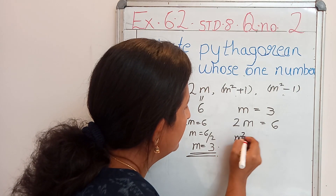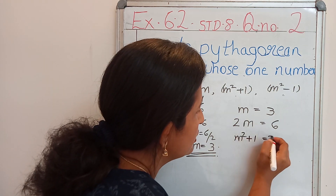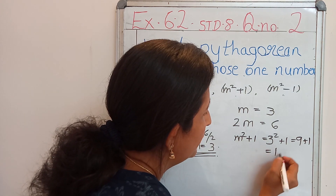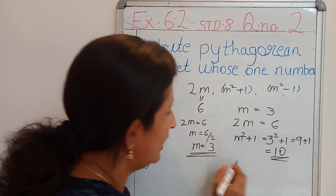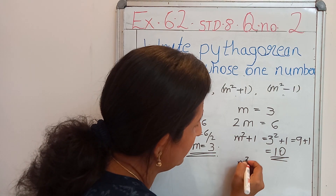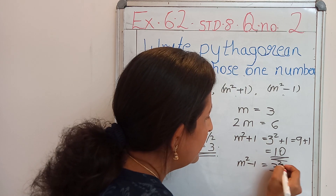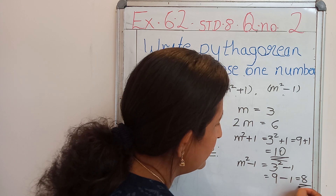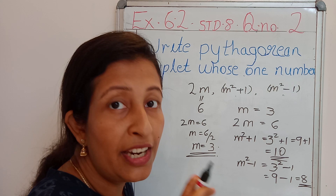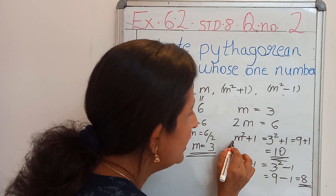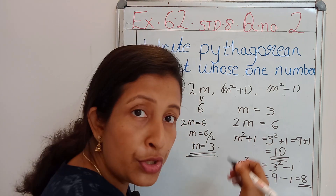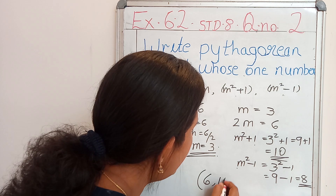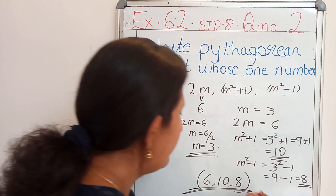m square plus 1, where m is 3: 3 square plus 1 equals 9 plus 1 equals 10. Then the other Pythagorean triplet is 10. Then m square minus 1 where m is 3: 3 square minus 1 equals 9 minus 1 equals 8. So our Pythagorean triplets are — write the value of 2m, m square plus 1, and m square minus 1. Put it in a bracket: (6, 10, 8). These 3 are the Pythagorean triplets.